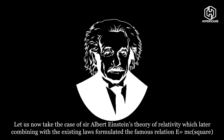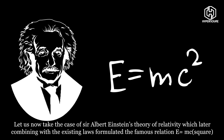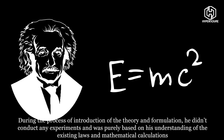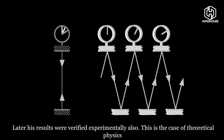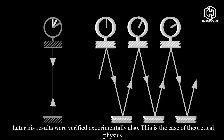Let us now take the case of Sir Albert Einstein's theory of relativity, which, combining with the existing laws, formulated the famous relation E equals mc squared. During the process of introduction of the theory and formulation, he didn't conduct any experiments and was purely based on his understanding of the existing laws and mathematical calculations. Later, his results were verified experimentally. This is the case of theoretical physics.